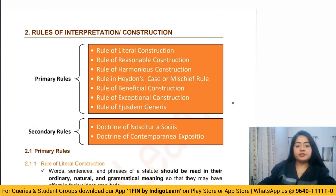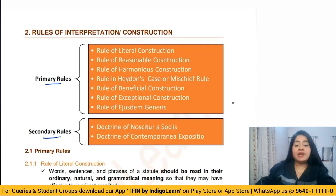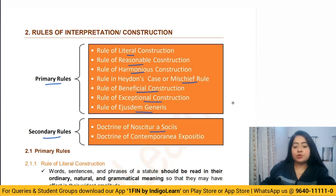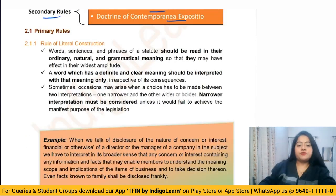Now let's move to the rules of interpretation. In primary rules we will discuss: the rule of literal construction, reasonable construction, harmonious construction, the mischief rule or Heydon's rule, the rule of beneficial construction, exceptional construction, and ejusdem generis. In secondary rules we will study: noscitur a sociis and contemporanea expositio.